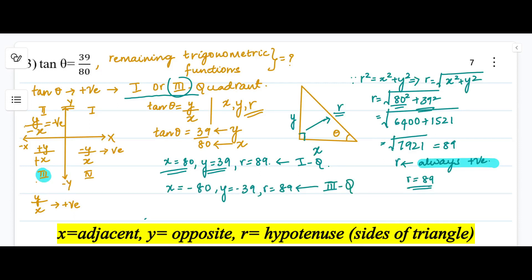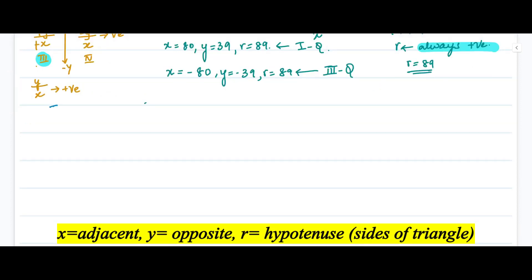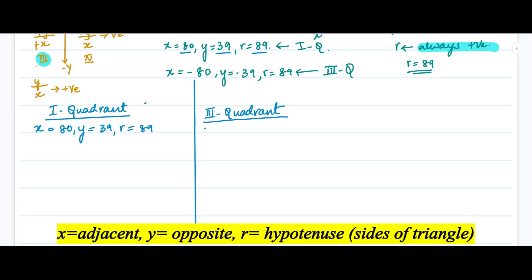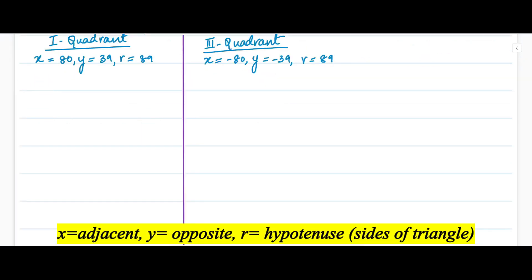Now we find the remaining trigonometric functions for both the first and third quadrants. For the first quadrant: x = 80, y = 39, r = 89. For the third quadrant: x = -80, y = -39, r = 89. We will find the trigonometric functions for each quadrant one by one.